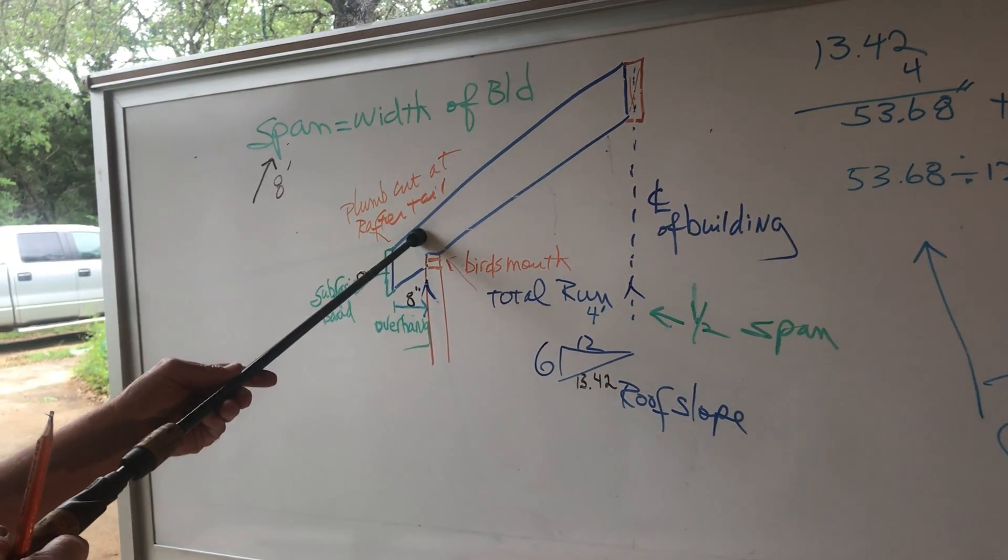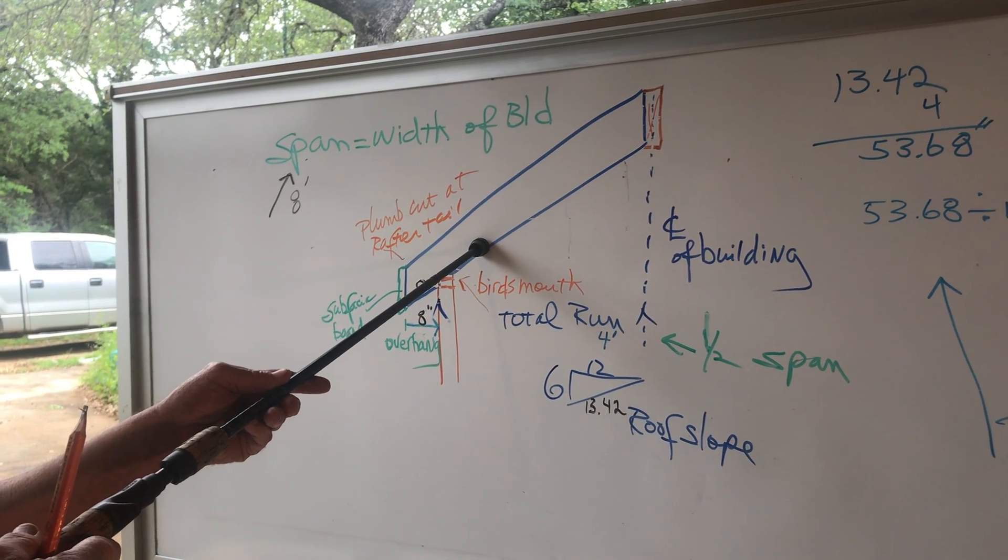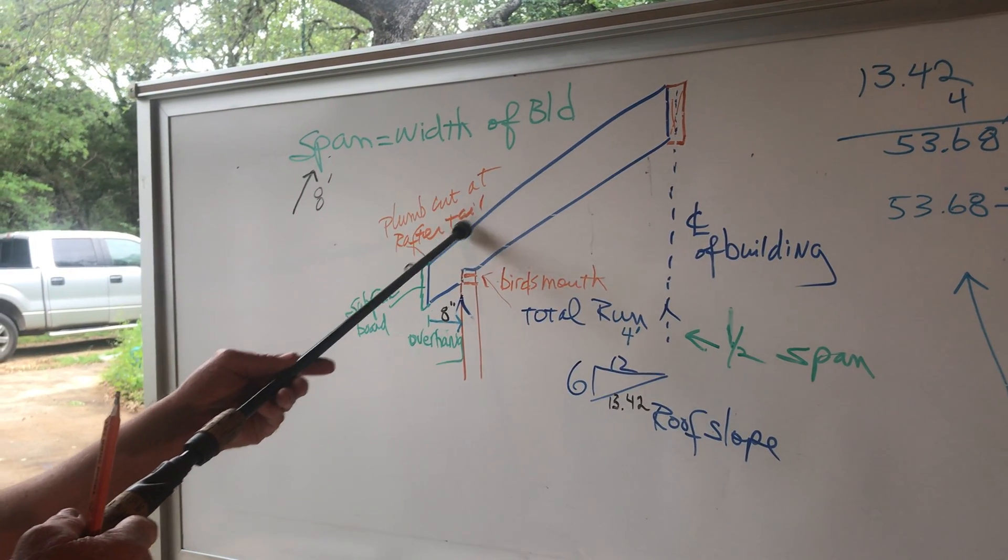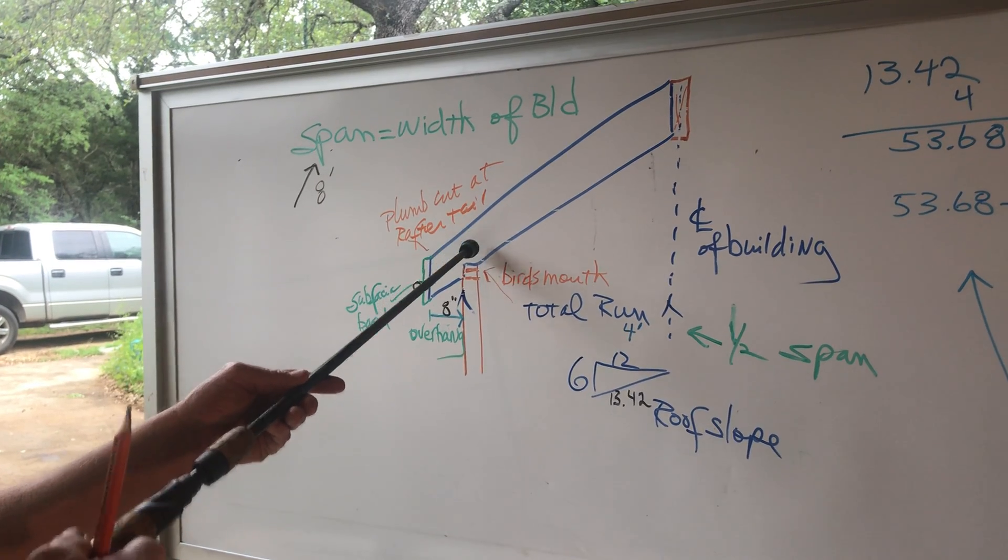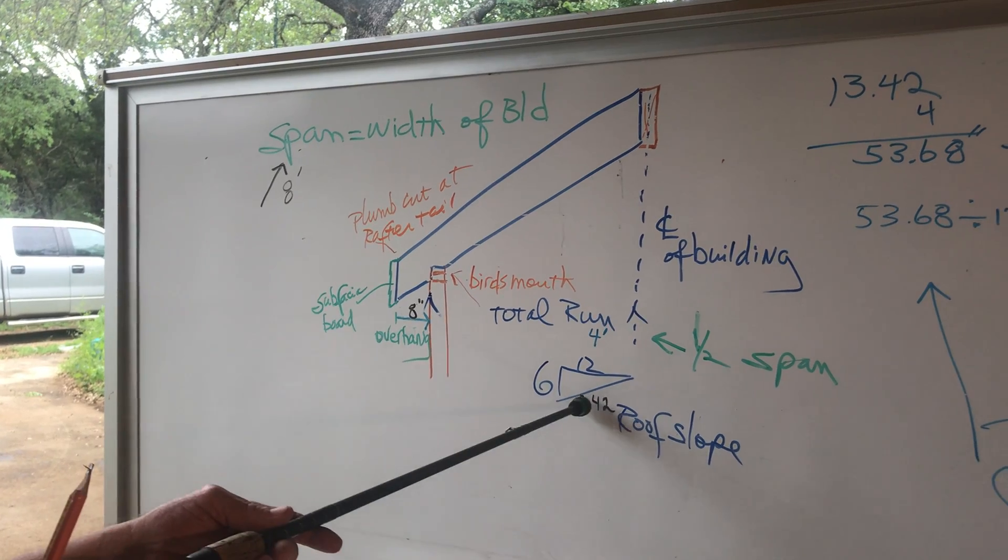So that number right there is a unit of rafter length. For every 6 inches that I come up here above the wall, and for every 12 inches that I go toward the center line, I'm also laying out 13.42 inches of rafter length.